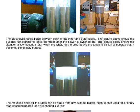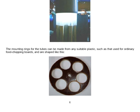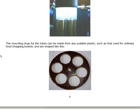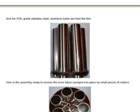The mounting rings for the tubes can be made from any suitable plastic such as that used for ordinary food chopping boards and they're shaped like this. Dave only used six pairs of pipes and this dark material is actually plastic even though you don't expect plastic to look that colour. The 316L grade stainless steel seamless tubes are held like that by being pushed into this bottom piece, the base made from plastic.